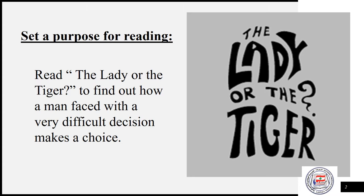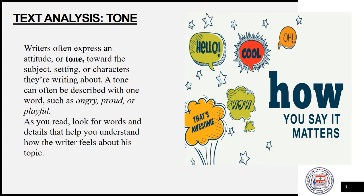Let's start with text analysis. What is tone? Writers often express an attitude or tone towards the subject, setting, or characters they're writing about. A tone can often be described with one word, such as angry, proud, or playful. As you read, look for words and details that help you understand how the writer feels about his topic.